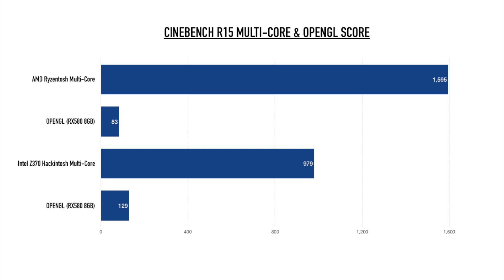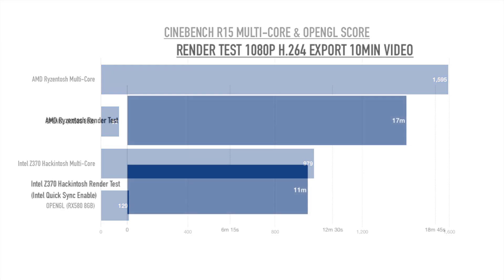In Cinebench R15, the Ryzen hackintosh multi-core score is around 1,595 and the OpenGL score with the RX 580 is 83 fps. The Intel Z370 hackintosh multi-core score is around 979 — keep in mind that's a six-core CPU without hyperthreading — and the OpenGL score with the same RX 580 graphics card is 129 fps.